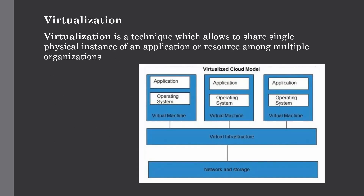The first one is virtualization. Virtualization is a technique which allows us to share a single physical instance of applications among multiple organizations. As shown in this figure, this is the virtualized cloud model in which we are sharing a single network and storage system to multiple virtual machines using the virtual infrastructure. We can access our applications by using virtual machines from anywhere in the world — you just need internet for that. It does this by assigning a logical name to a physical resource and providing a pointer to that physical resource whenever it is required. The multi-tenant architecture offers virtual isolation among these multiple tenants, so organizations can use and customize their applications as though they each have their own instances running.